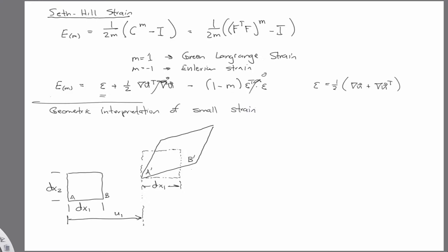And so if the line segment, if this is really truly a small displacement, then this length here, we can write as the partial derivative of u1 with respect to x1 dx1.